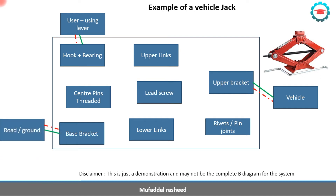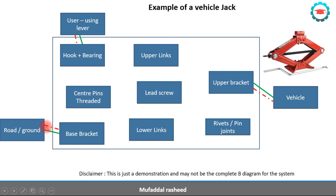There is also physical contact and load transfer — torque is transferred which is responsible for rotating the lead screw and operating the jack. The other external element is the ground, on which the bottom bracket rests and from which it gets its support. The bottom bracket rests on the ground because that is where the reaction force comes from, allowing the jack to be operated. Again, there is physical contact and load or energy transfer.